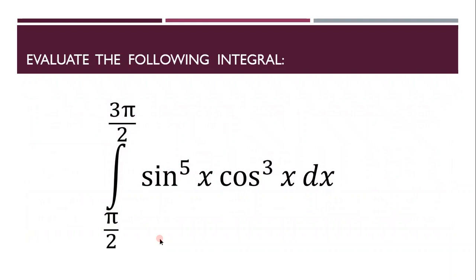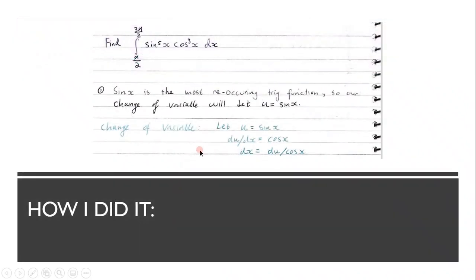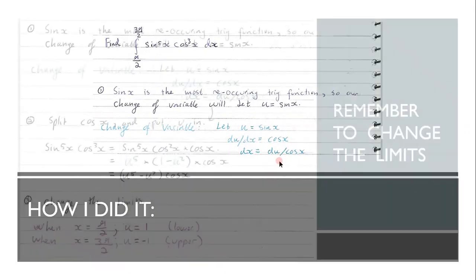So let's evaluate this integral. It's got odd powers, so we're going to need to use our Pythagorean identity. So the first step that we need to do is recognize that sine x is the most reoccurring trig function. So a change of variable will let u equal to sine x. Differentiate it as cos x, and our dx is just du over cos x.